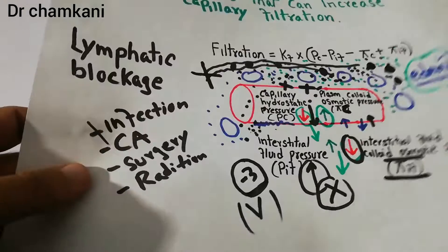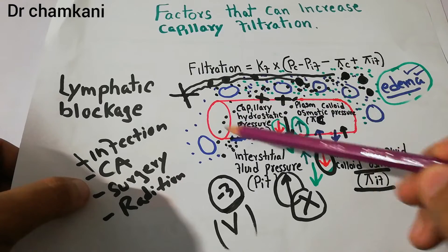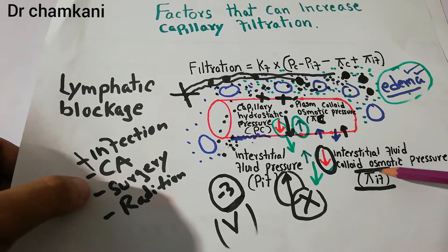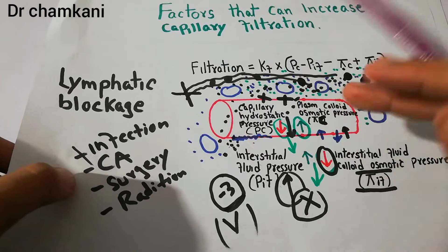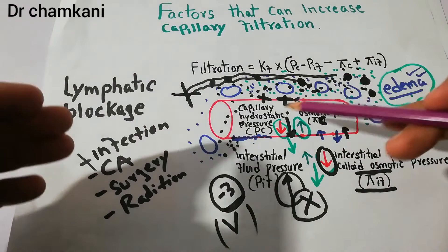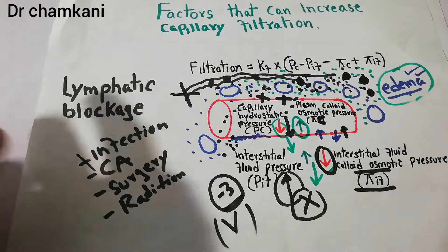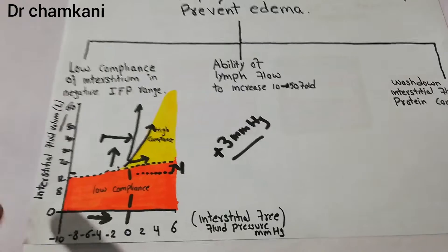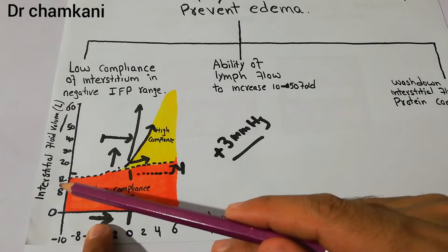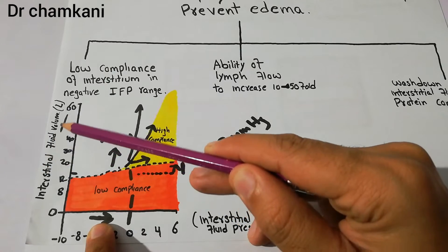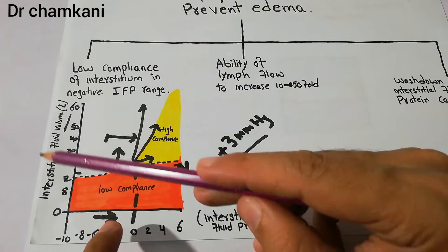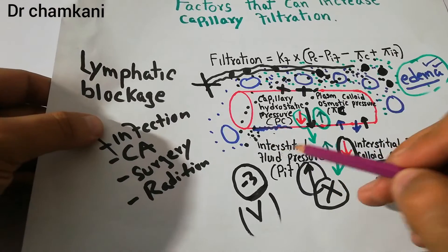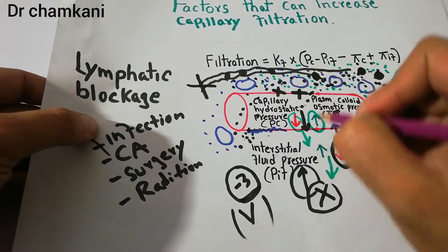To understand this, we must quickly revise the forces present at the level of capillaries: capillary hydrostatic pressure, interstitial fluid pressure, plasma colloid osmotic pressure, and interstitial fluid colloid osmotic pressure, which are all active at the capillary level in filtration. If the filtration of fluid from the capillary into the interstitium is high, edema will occur. We are focusing on interstitial fluid pressure, which in the negative zone forces fluid back into the capillary, preventing edema.